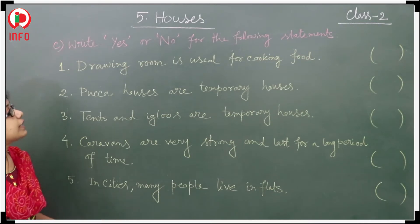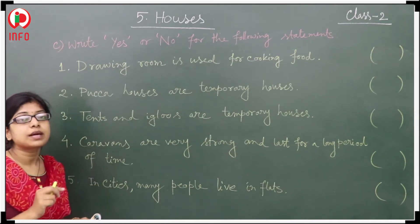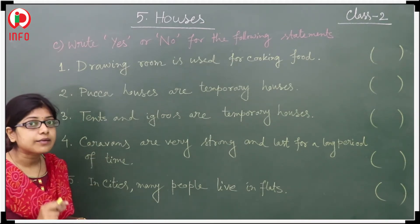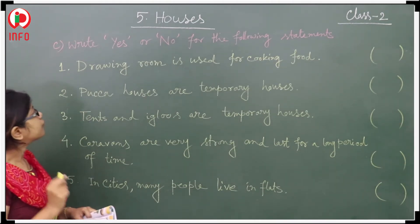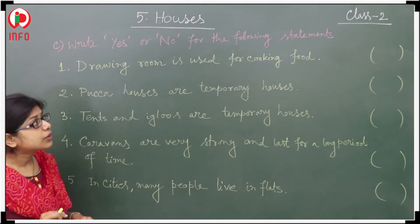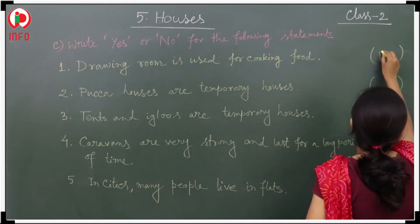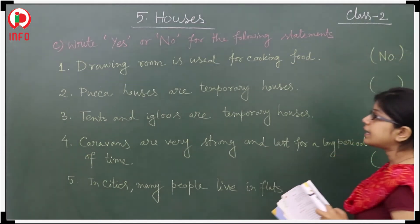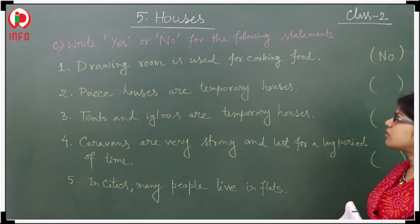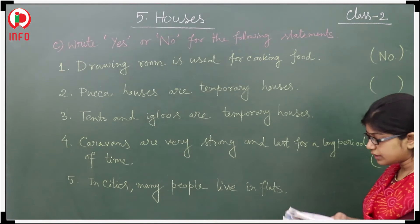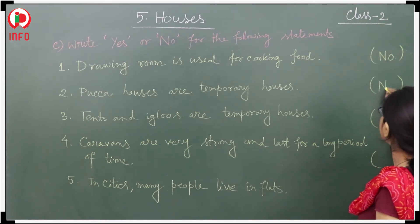Now write yes or no for the following statements. If the statement is correct, write yes; if not correct, write no. First: drawing room is used for cooking food — no, that is not correct, so write no. Second: baga houses are temporary houses — no, that is also not correct because they are permanent houses, so write no.